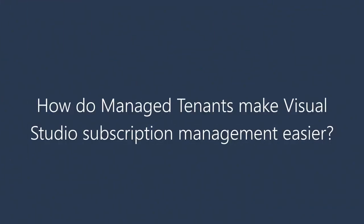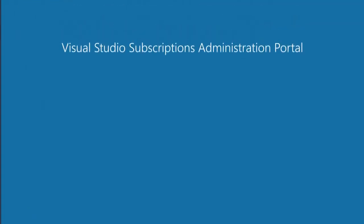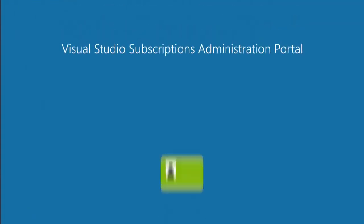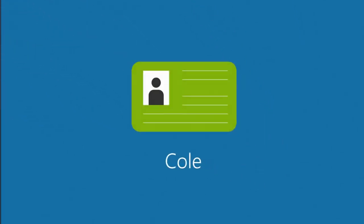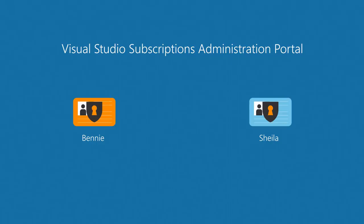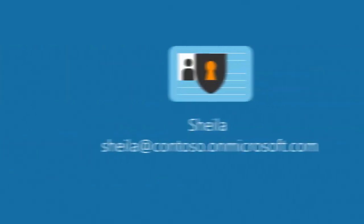How do managed tenants make Visual Studio subscription management easier? The Visual Studio subscriptions administration portal will recognize all your users and be able to track the status of their email accounts. This is helpful because the system will identify when a person's account is deactivated and block access to the subscription. However, the subscription will still be listed in the portal until it is removed by the administrator. This makes subscription management easier since there is one less step an administrator needs to take to manage unauthorized access. If you're already on a managed tenant, make sure your users are not using MSAs by checking their sign-in email address.